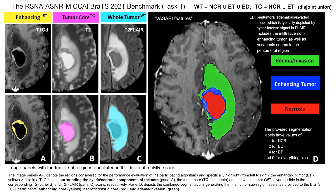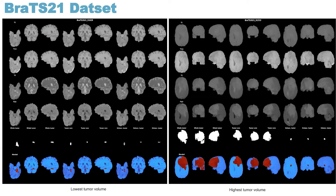The challenge organizers provided the annotated ground truth in three mutually exclusive tumor regions called glioblastoma regions: necrosis, edema, and enhancing tumor. The dataset is quite heterogeneous, varying in size, volume, shape, and tumor location. The figure on the left represents the subject having the lowest tumor volume, and the figure on the right represents the subject having the highest tumor volume.